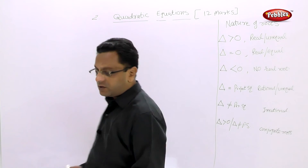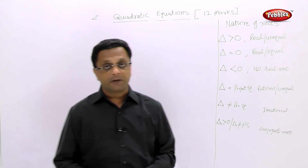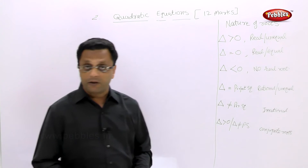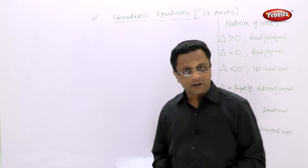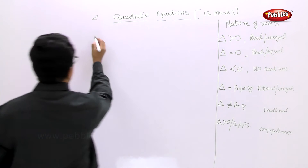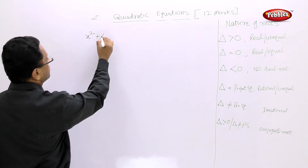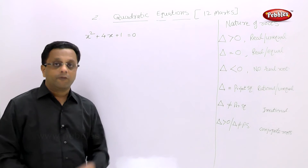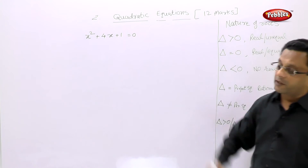The first kind of example is very simple — it says find the value of the discriminant for each of the following equations. They will give some quadratic equations and you have to find the discriminant. The given quadratic equation is x² + 4x + 1 = 0, and we have been asked to find the value of the discriminant.